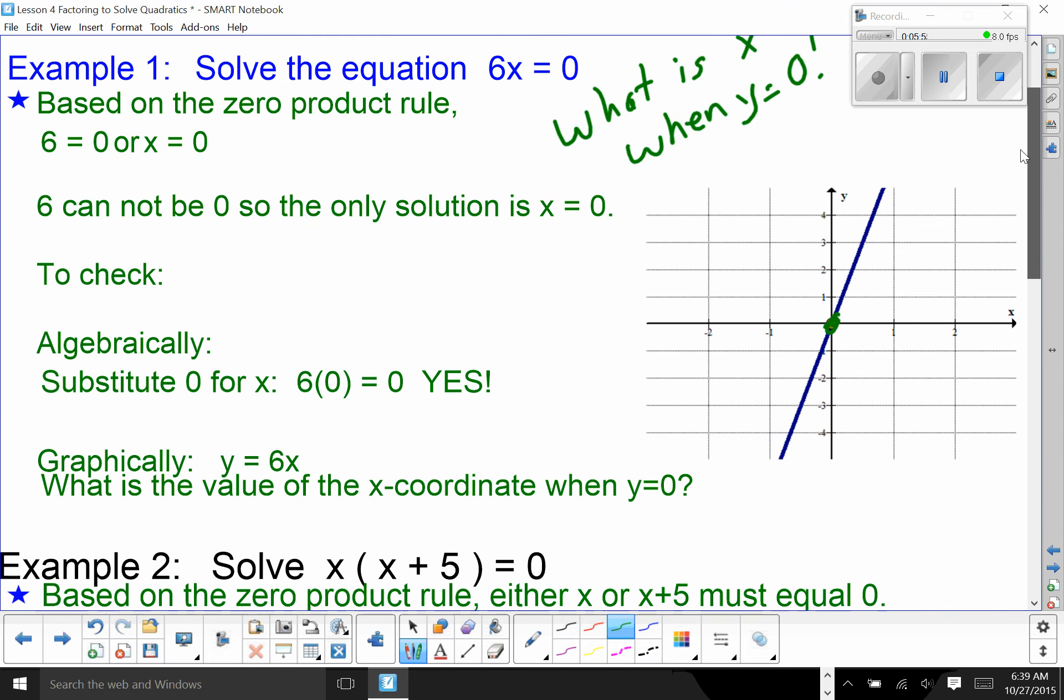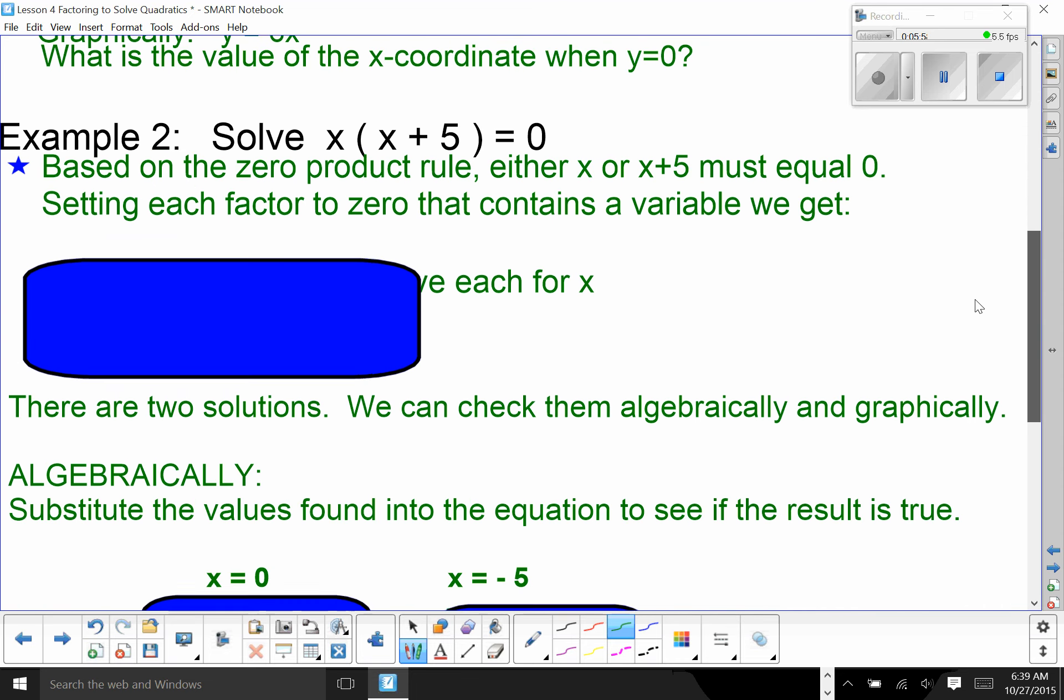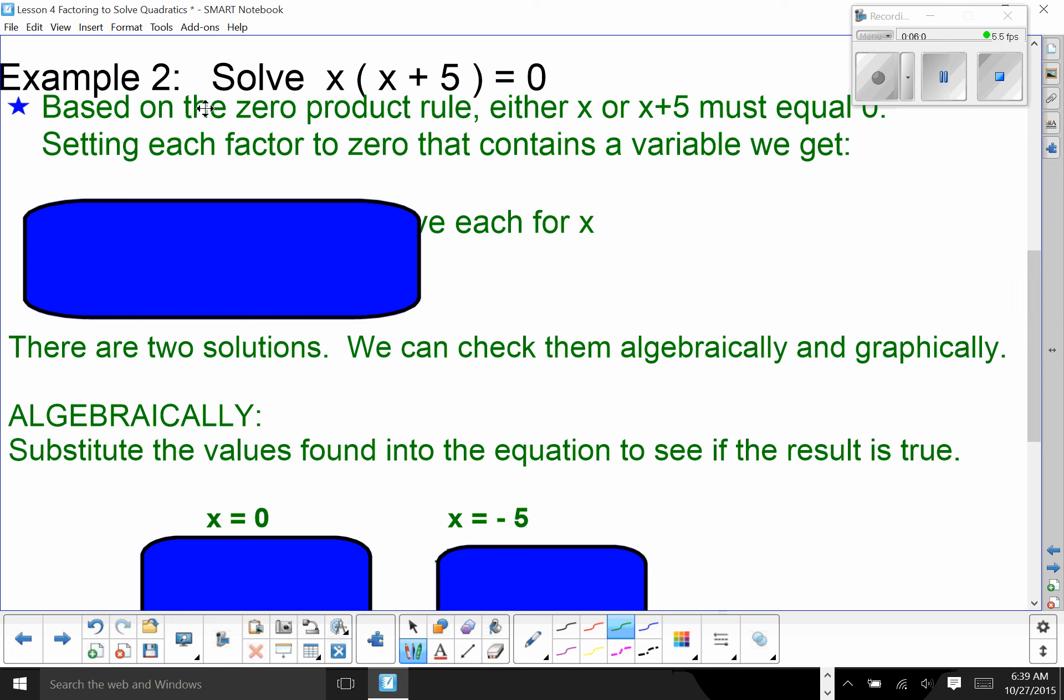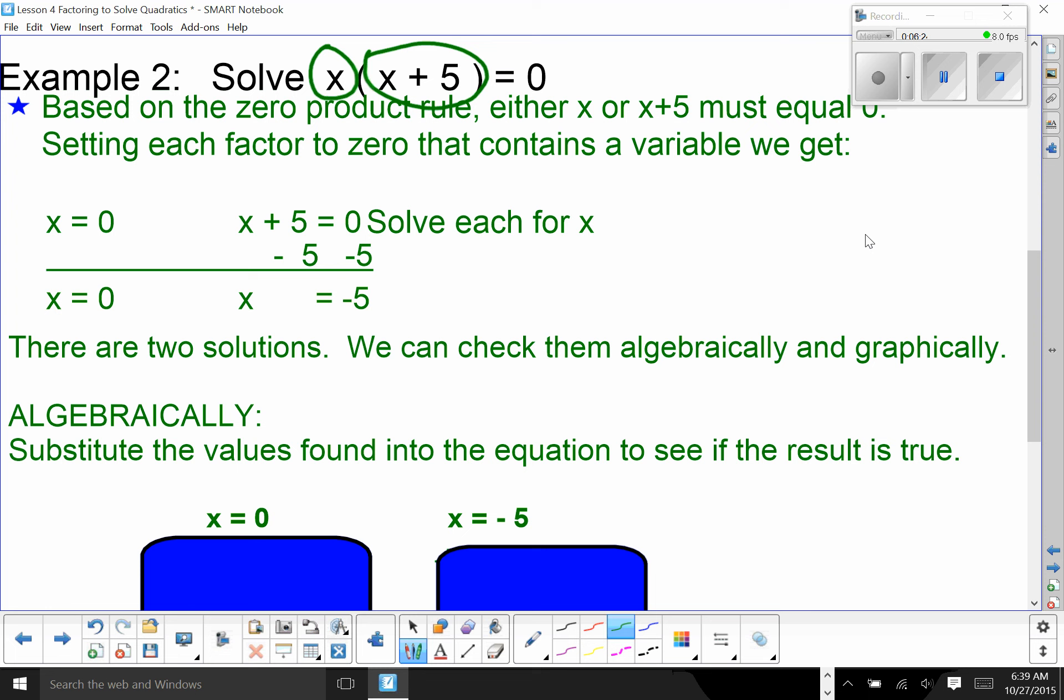So, the zero product rule, if I have a bunch of things multiplied together and they equal zero, well then, one of them has to be zero. Example two. X times X plus 5 equals zero. Based on the zero product rule, either X or X plus 5 must equal zero. Therefore, I can set each factor to zero. Remember, factors are things we multiply together. So I have this times this. I set each one of those items equal to zero and I solve.